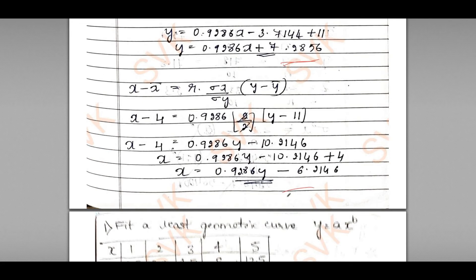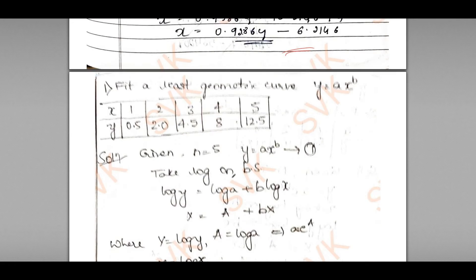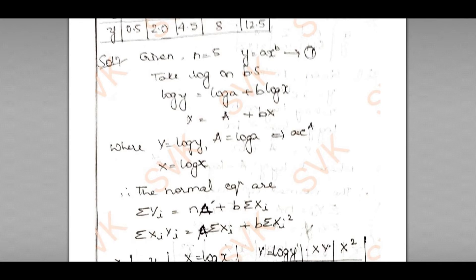If they ask for the regression line, you need to get the regression line of y on x and x on y. You can also verify my previous video to see how to get the solution for rank problems. Here, by the least square method I need to fit a power curve y = ax^b for the given data.